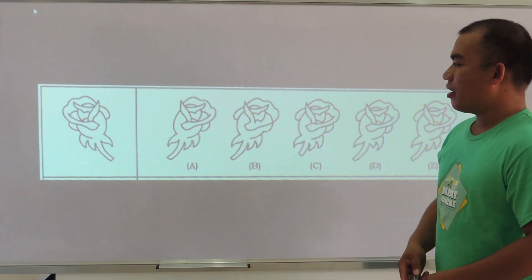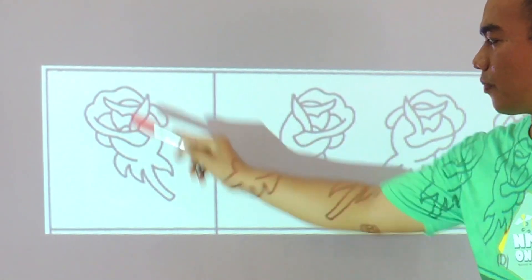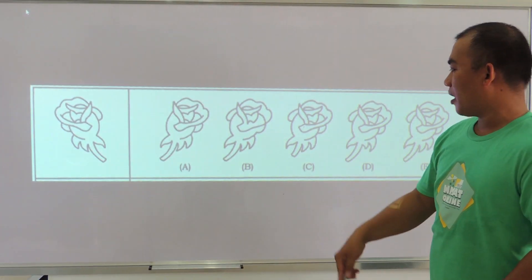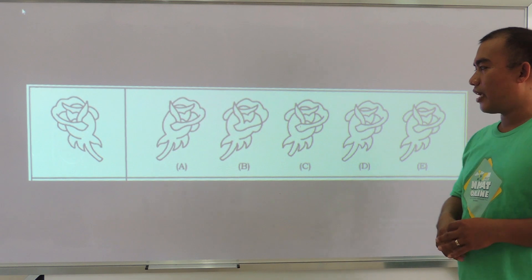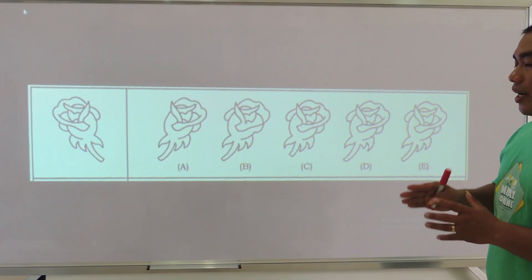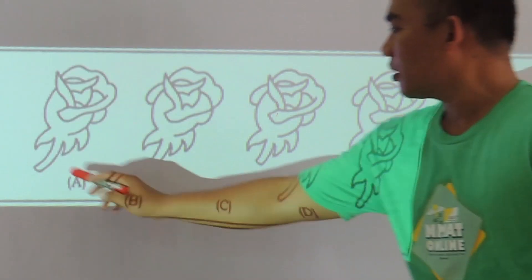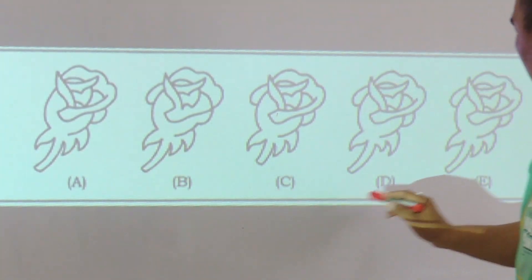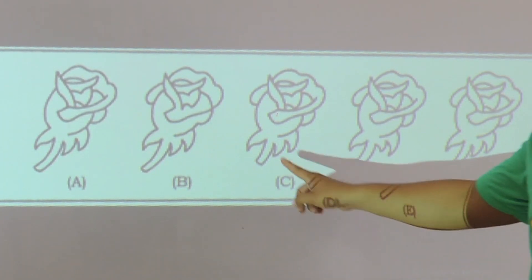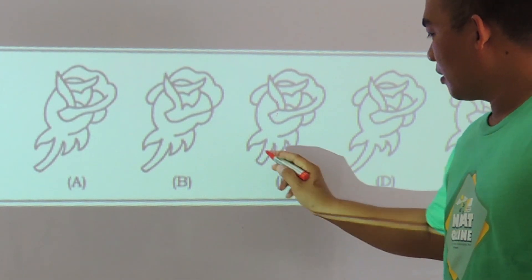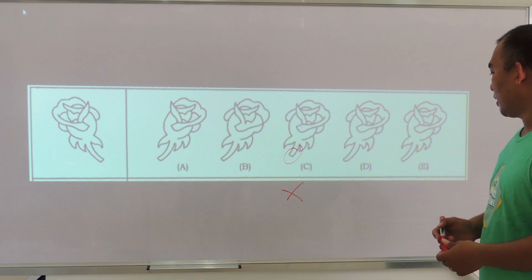The second example: we have the original figure and we are going to look for its mirror image among the five options. Let's apply the method again — focus on one part of the figure at a time. For example, the top. The figure looks like a rose, and this part is shorter. Therefore, option C could be eliminated.